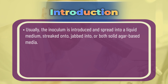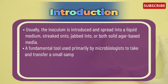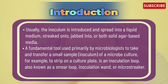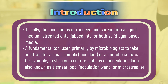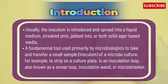Usually the inoculum is introduced and spread into liquid medium, streaked onto, or stabbed into solid agar-based media. A fundamental tool used primarily by a microbiologist to take and transfer a small sample inoculum of a microbial culture — for example, to streak on a culture plate — is an inoculation loop, also known as a smear loop, inoculation wand, or microstriker.